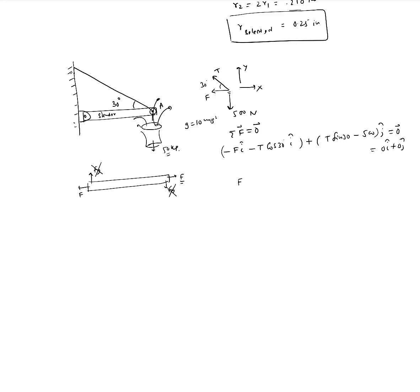This is zero i hat plus zero j hat. What do we get? We get F plus T cosine 30, which is root 3 by 2, equal to zero. And we get T by 2, because sine 30 is one half, minus 500 equal to zero. So that gives us tension as 1000 Newtons. What do we get for F? F is equal to minus T times root 3 by 2, so that's minus 500 root 3 Newtons.